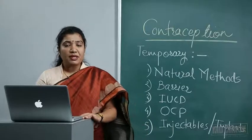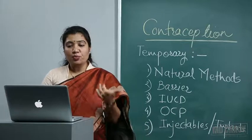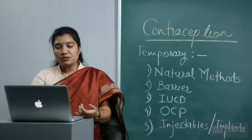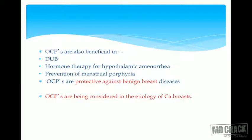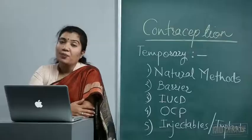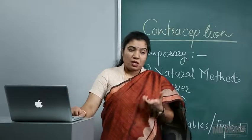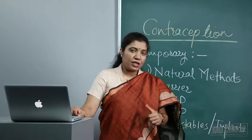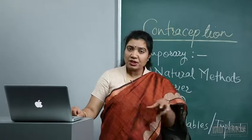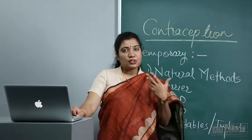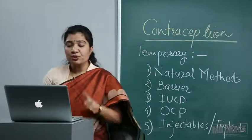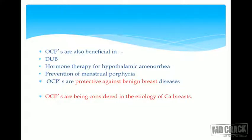Remember: OCPs are beneficial for ovarian cancers, ovarian cysts, PID, and endometriosis. They are also used in dysfunctional uterine bleeding, hormone therapy for hypothalamic amenorrhea — where deficient GnRH leads to decreased FSH and LH and estrogen deficiency — and in prevention of menstrual porphyria. OCPs are protective against benign breast diseases; their role in carcinoma of the breast is controversial.